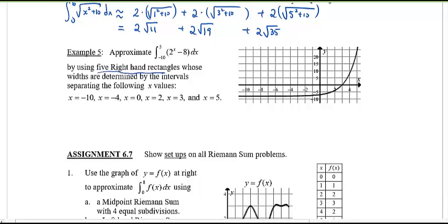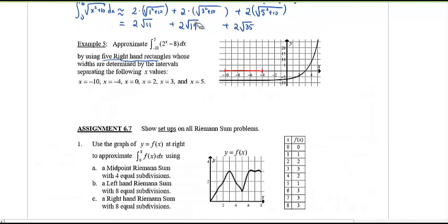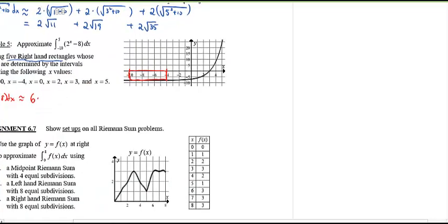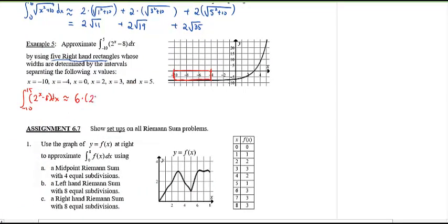Now notice that, once again, 5 right-hand rectangles whose widths are determined by the intervals separating. So once again, they don't have to be the same. So I'm starting at negative 10 and going all the way to negative 4. So this is my first interval, it's 6 units long. So how can I write this out for us? The integral from negative 10 to 15 of 2 to the power of x minus 8 dx approximately equals to. My first width is 6 units wide. I'm going to use the right-hand rectangle, so I'm going to use the right-hand end point, which would be negative 4. Notice this is below the x-axis, so this answer should be negative. And to evaluate this, 2 to the power of negative 4 minus 8.